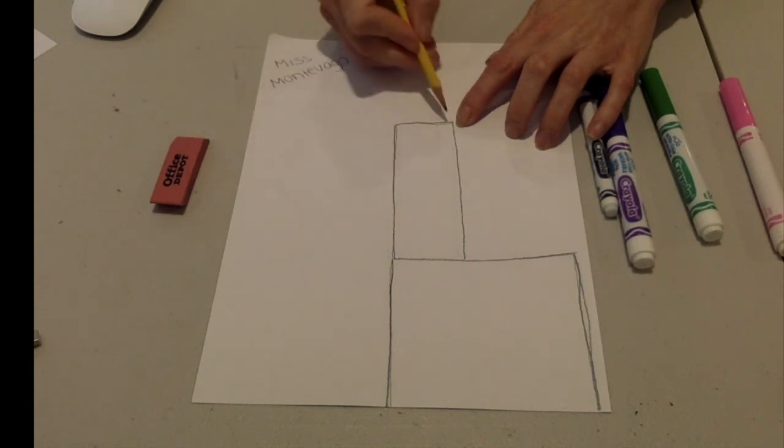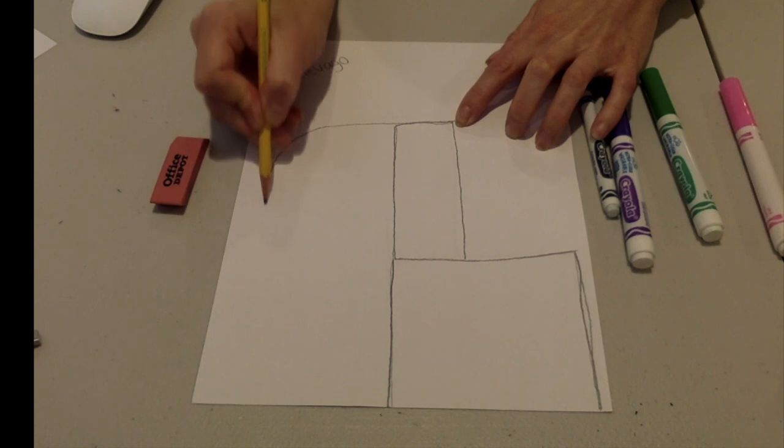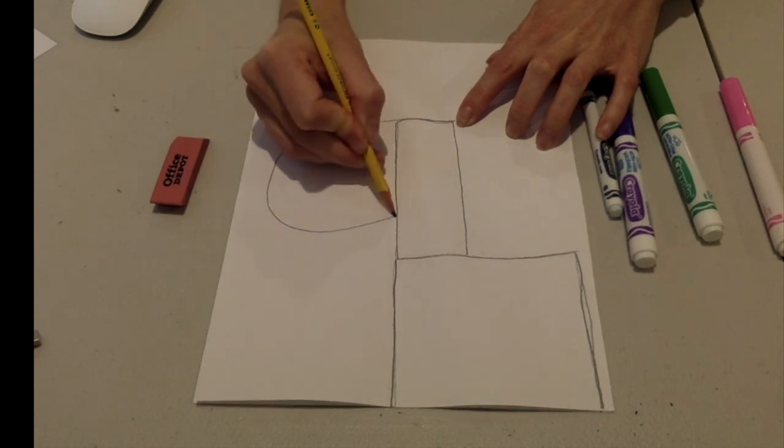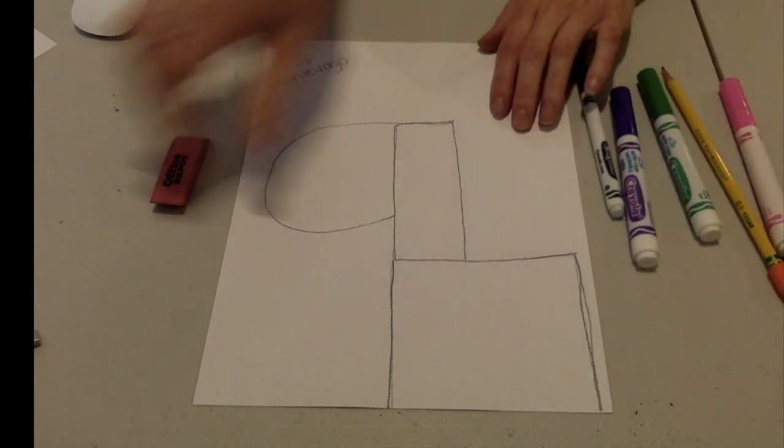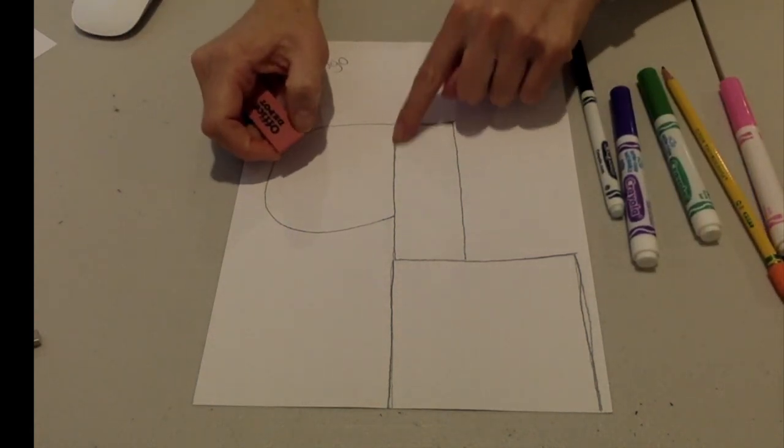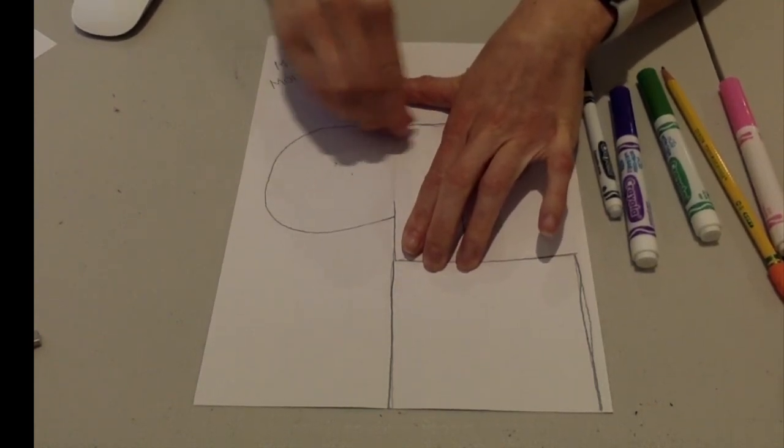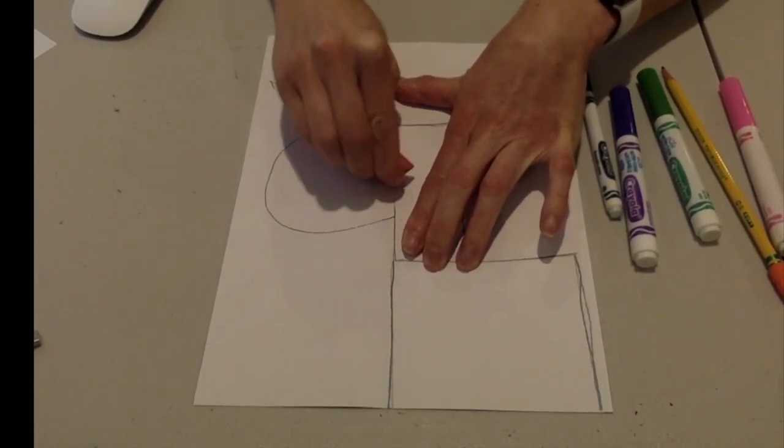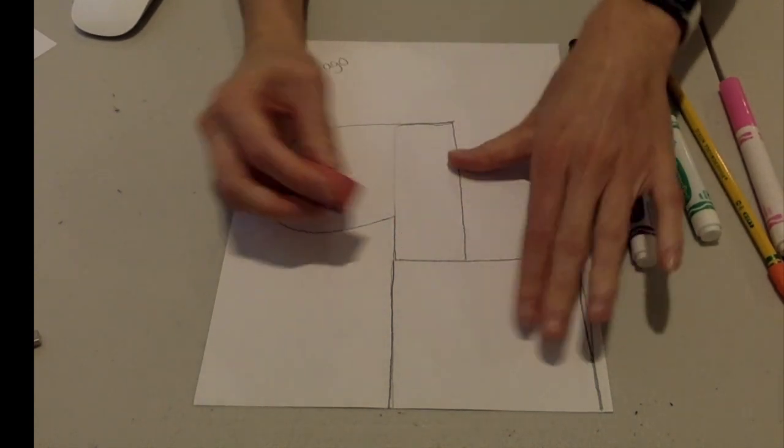Now we're going to make a semicircle on top to create the face of our llama. Notice I stopped again once I reached the rectangle edge. Now grab your eraser, I want you to erase that line right there, and this tiny line right there.